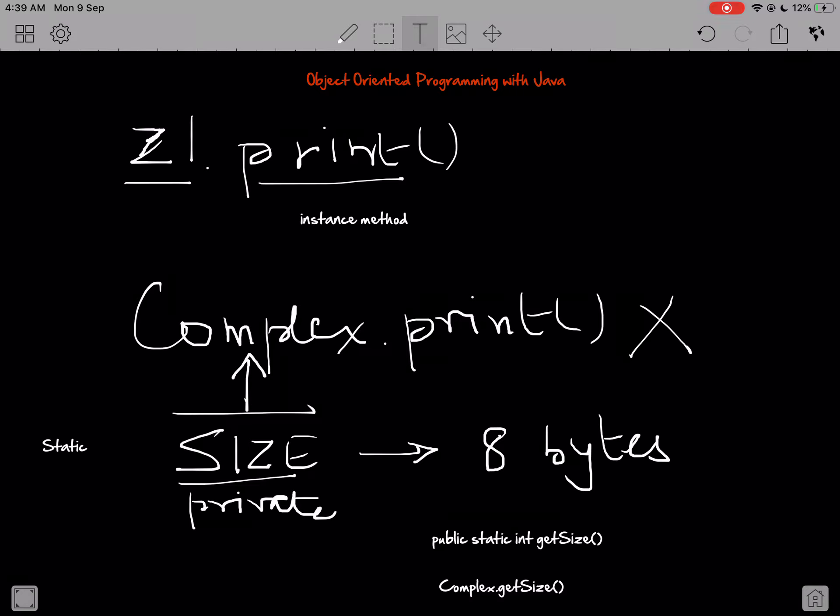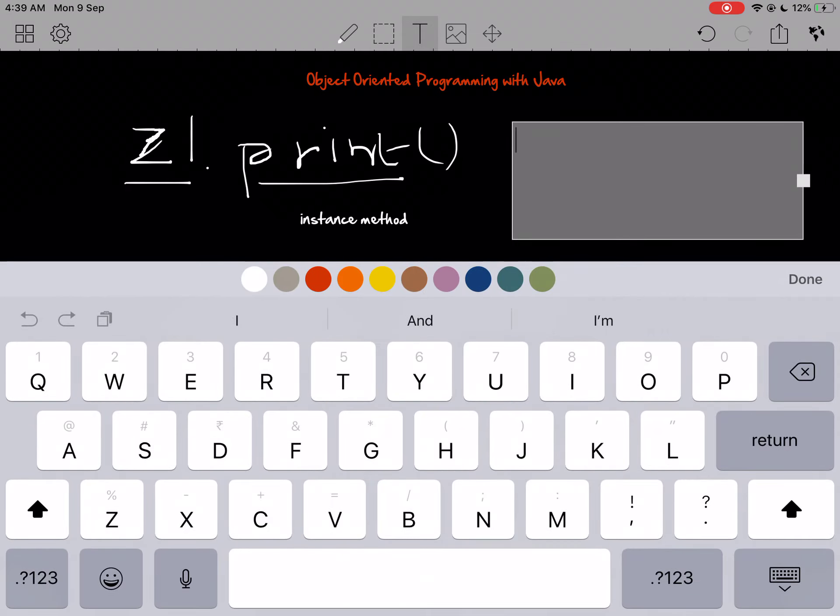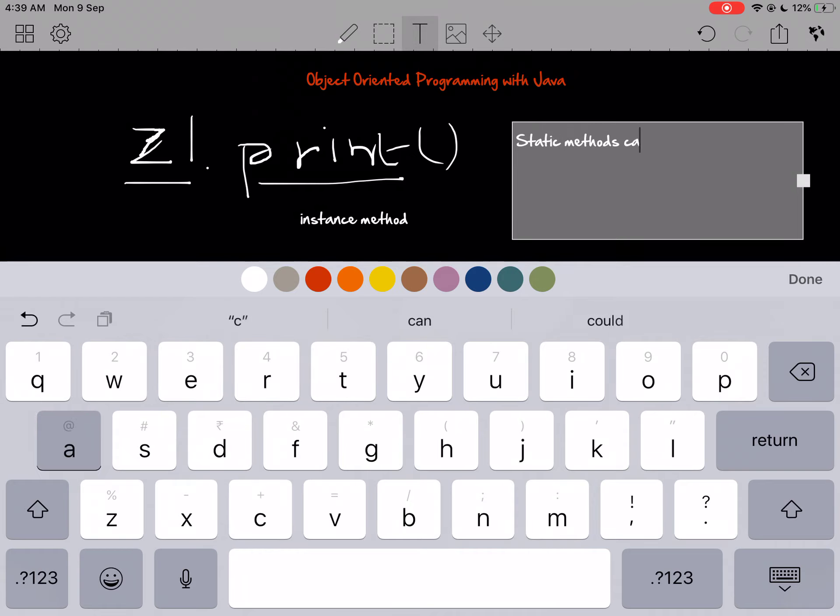I think that's it about static and instance methods. But there's just one last point that I need to point out and I'll end this video with that. The point is that static methods can only access other static methods and static attributes of the class.